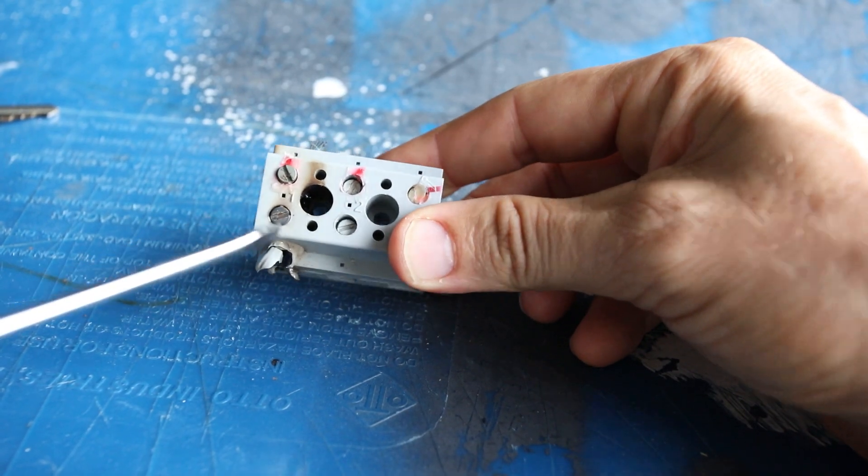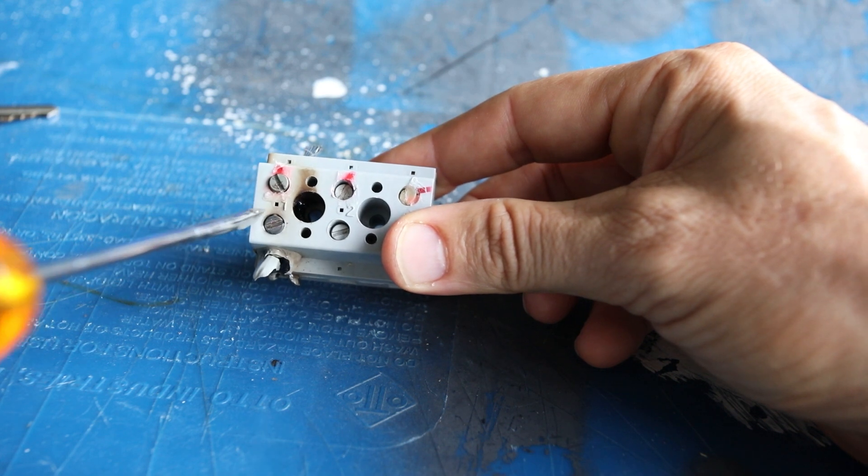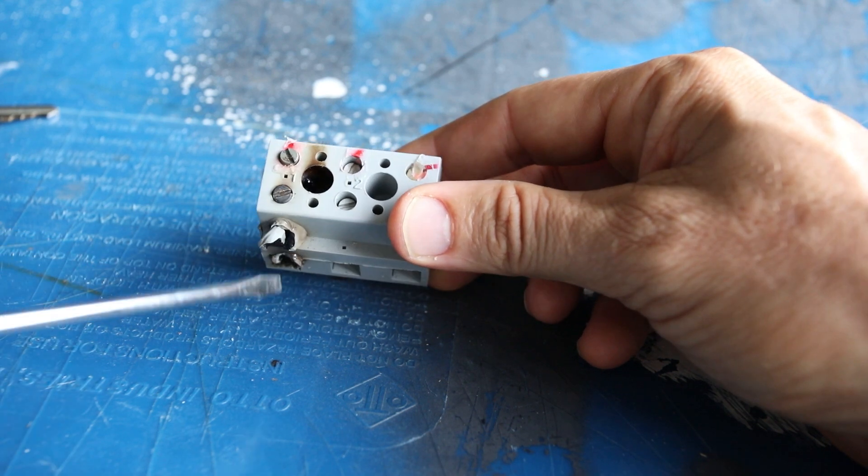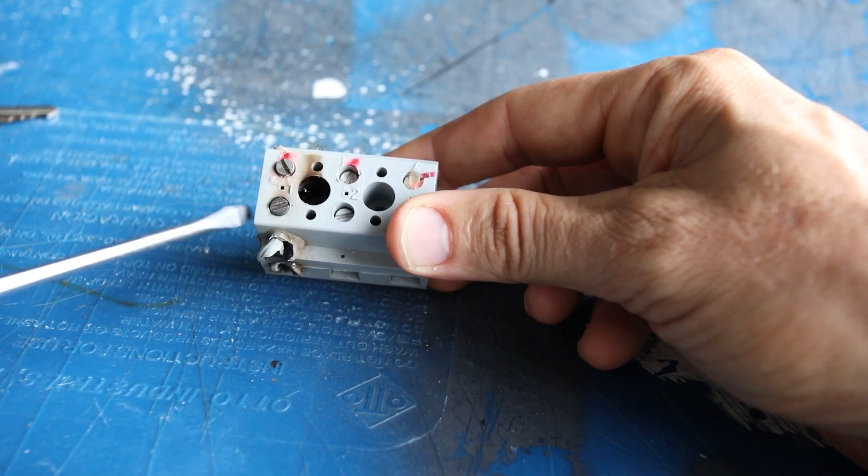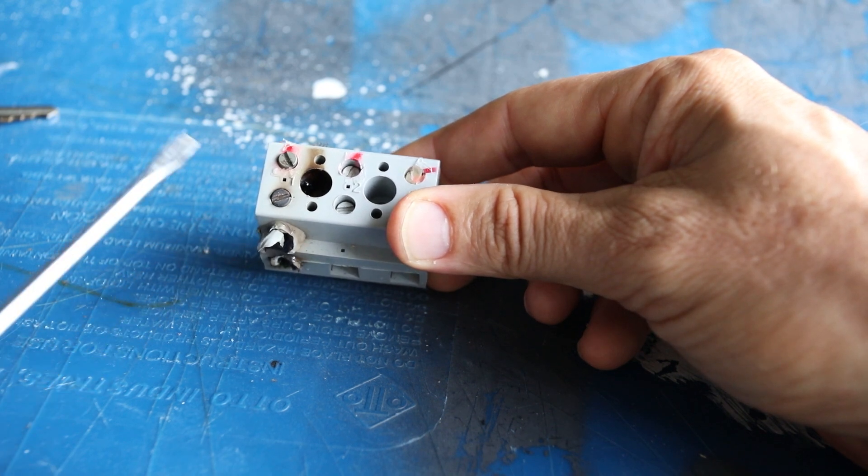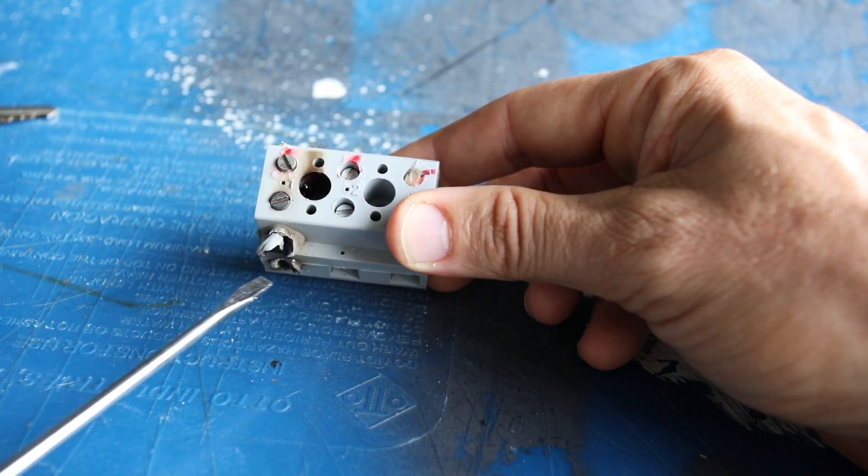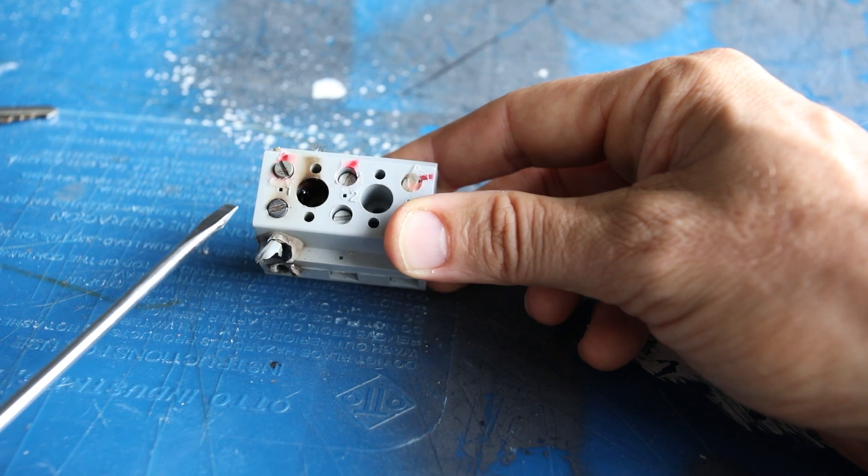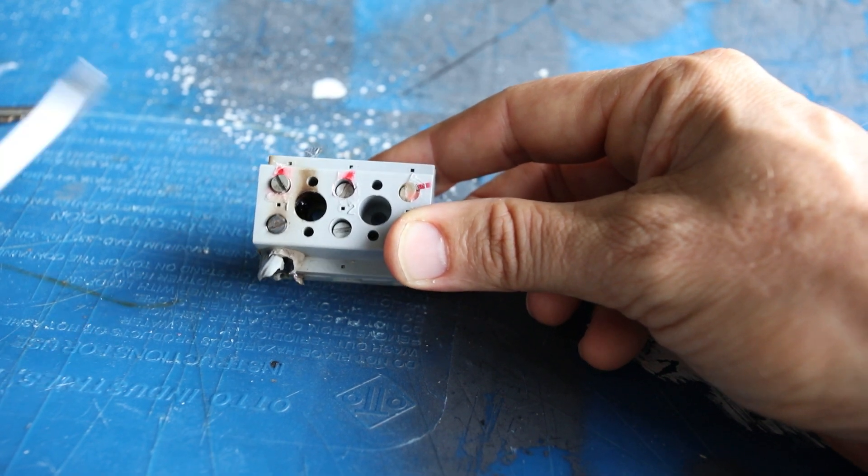What I think happened is with that vibration, this thing's wiggling, this thing kind of just slowly backed itself out and this wire basically got loose. And then that looseness basically caused it to arc and or get really, really hot.